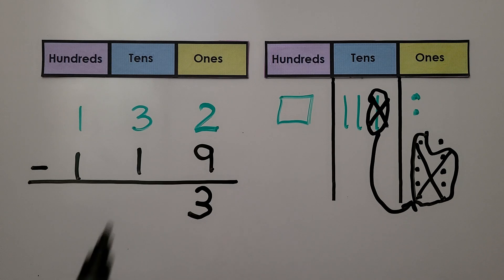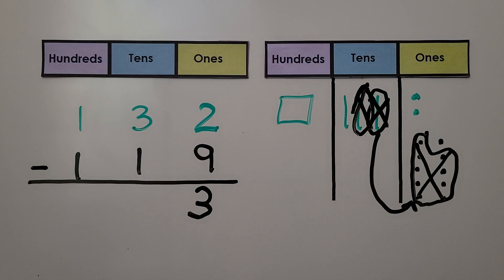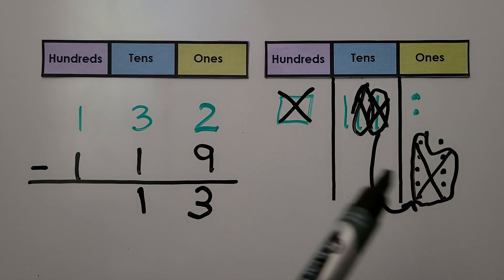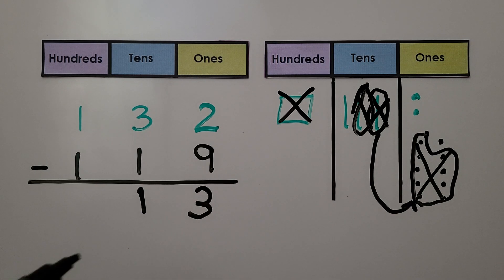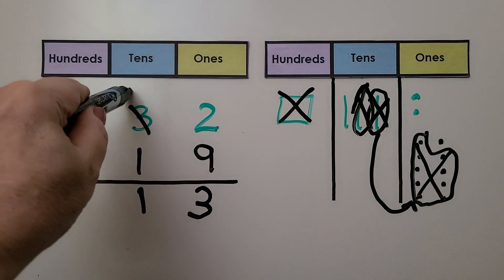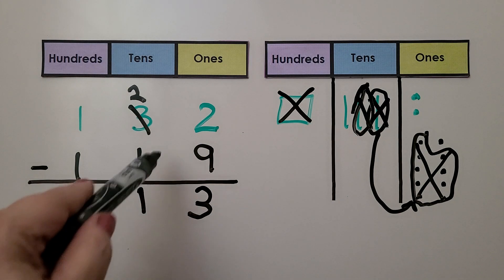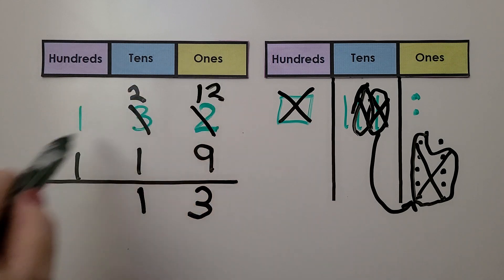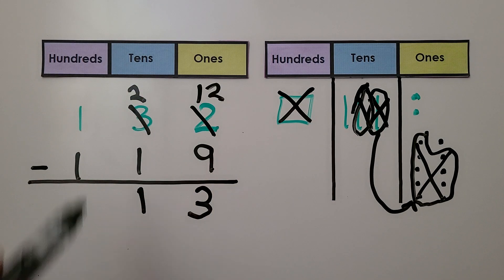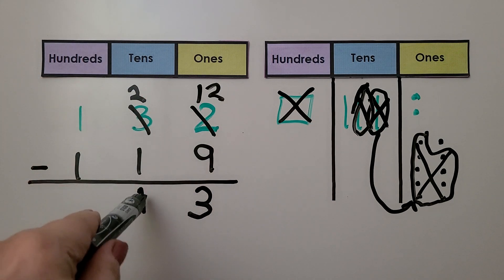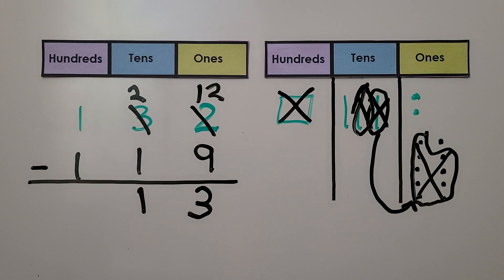We need to take away this one ten, so we cross off a ten. We need to take a one hundred away, so we take away that one hundred. We're left with no hundreds, one ten, three ones. We regrouped from the tens place — the three tens became two tens, and we gave it to the ones place as ten ones. So instead of two ones, we had twelve. Twelve minus nine is three. Two tens minus one ten is one ten. It's equal to thirteen.